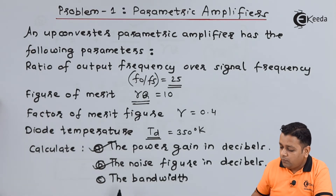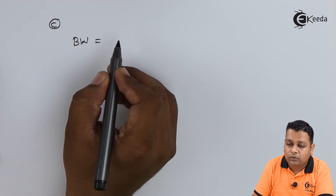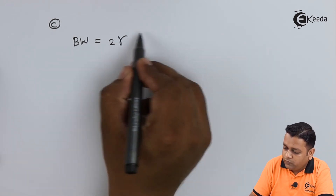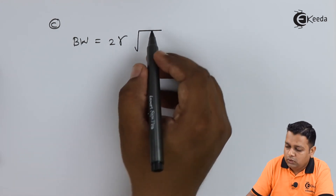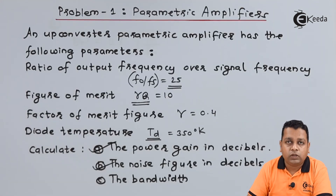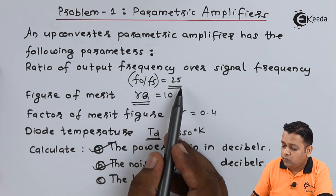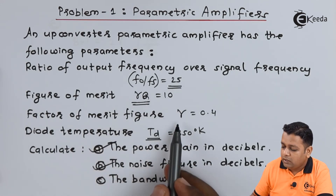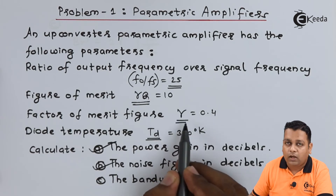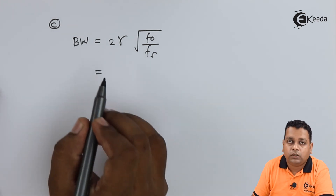Lastly, we require to compute the bandwidth as the answer for part C. The bandwidth BW is formulated as: BW = 2γ × √(f₀/fₛ). Getting back to the problem, the ratio of output frequency to signal frequency is 25, and we also use the factor of merit figure γ = 0.4.